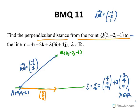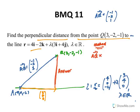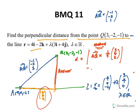I want to find the perpendicular distance. A point on the line is (4, 0, −2); call it A. Then AQ = Q − A = (−1, −2, 1). The direction vector of the line is (3, 4, 0). The perpendicular distance d = |AQ × (3,4,0)| / |(3,4,0)|. Since 3² + 4² = 25, the magnitude of the direction vector is 5. So d = |AQ × (1/5)(3,4,0)|.